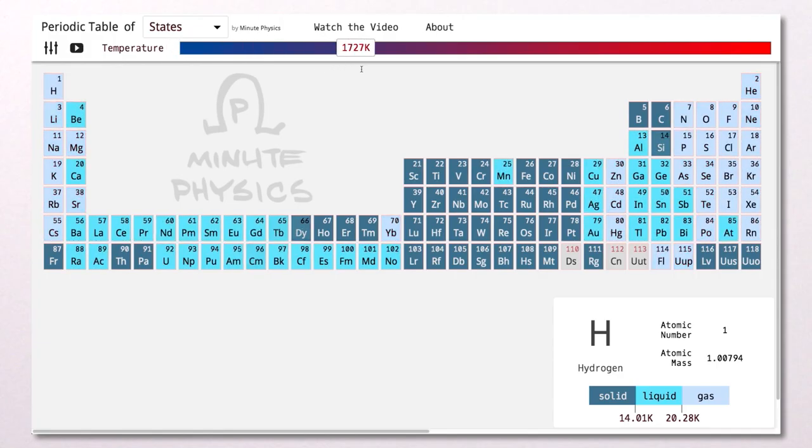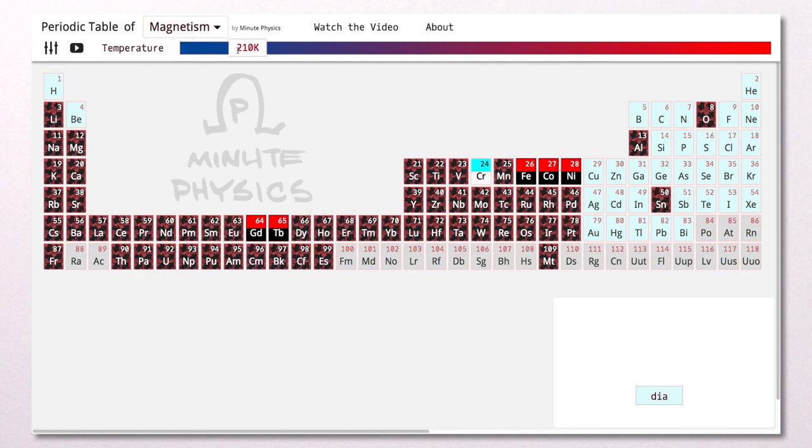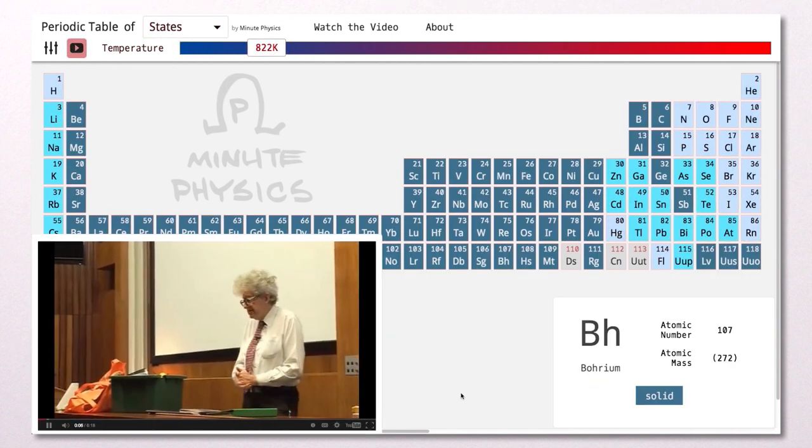And just as different elements melt from solid to liquid at different temperatures, they also melt from being ferromagnetic to paramagnetic at different temperatures, which you can explore in this sweet interactive periodic table, which also plays all the periodic table of videos.